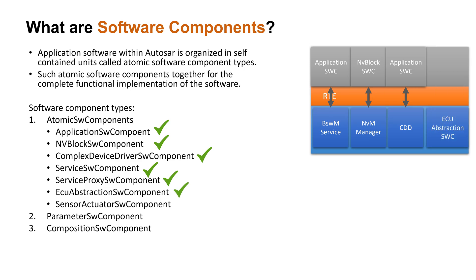ECU abstraction software component is a part of base software that acts as an interface between the MCAL layer and the application layer. A microcontroller inside an ECU may have many external peripherals to access, like H-Bridge ICs, PowerStage ICs, etc. To access and write drivers for such external peripherals, ECU abstraction software component is used. We can have multiple ECU abstraction software components and this purely depends on the number of external peripherals we have.